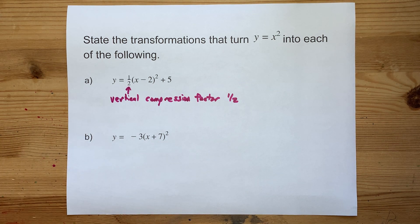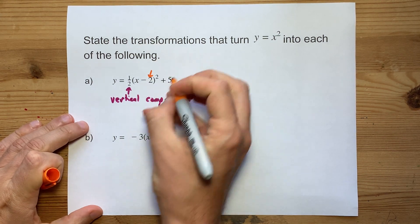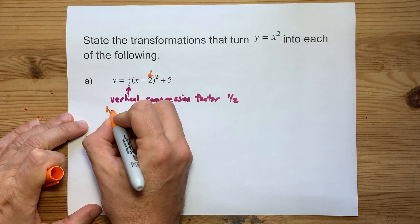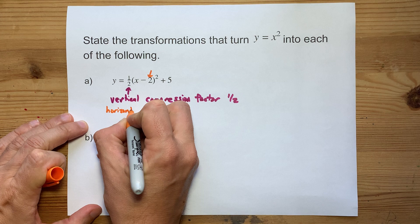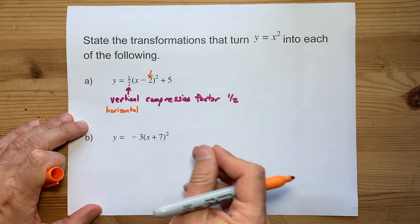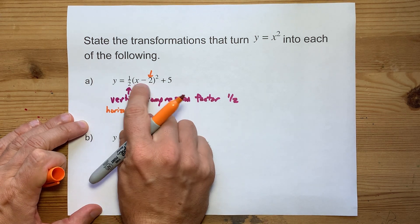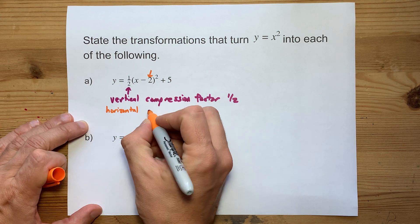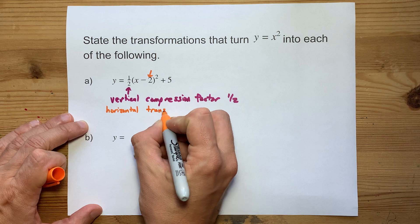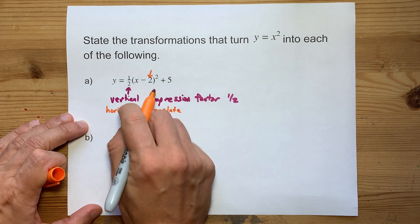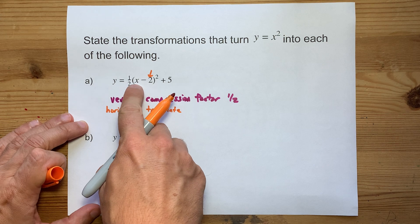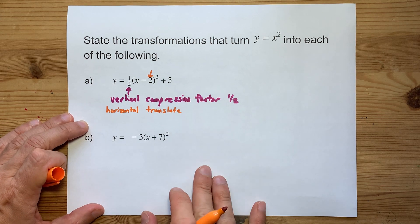Then you have this minus 2. That minus 2 is inside the brackets with the x. That's the hint that it is a horizontal change of some kind because it's inside the bracket with the x. And it is a shift or translation because it is added or subtracted from x. A horizontal stretch or compression would be if the x was multiplied or divided by something.